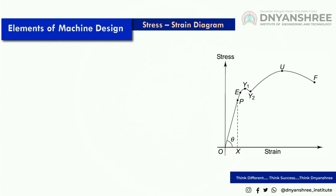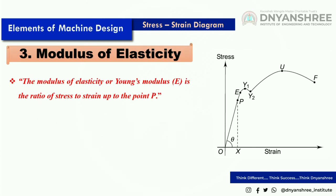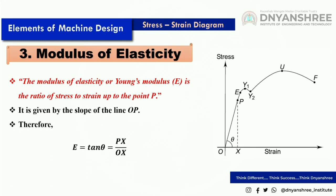The modulus of elasticity, or Young's modulus E, is the ratio of stress to strain up to point P. It is given by the slope of line OP, so E equals tan θ, where θ is the angle that line OP makes with the x-axis. Therefore, tan θ equals the opposite side divided by the adjacent side — that is, PX divided by OX — where PX is the stress value and OX is the strain value, giving E equals stress divided by strain.